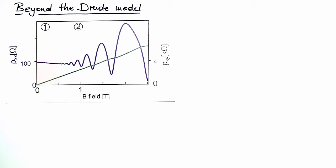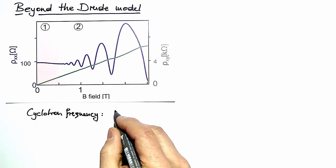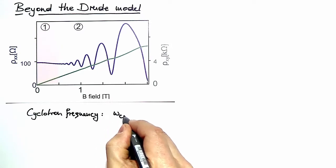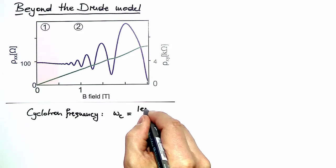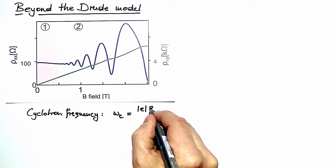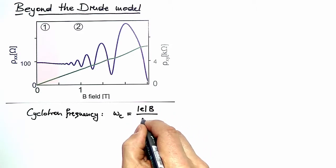Now if you think about electrons in a magnetic field classically, you know that they tend to move on cyclotron orbits and we know the cyclotron frequency is given by ωc equals the elementary charge times the magnetic field divided by the effective mass of the charge carriers.